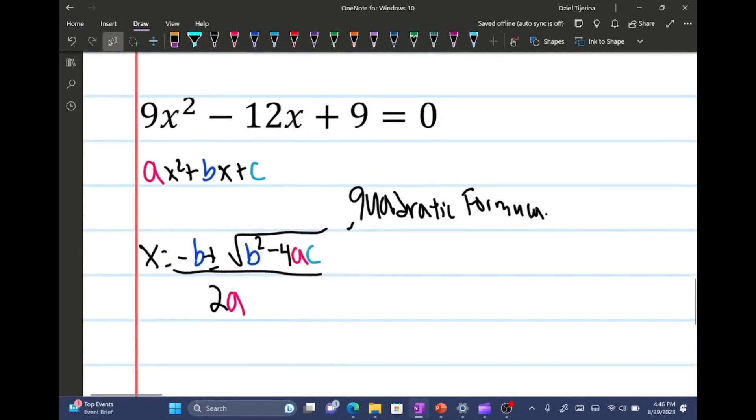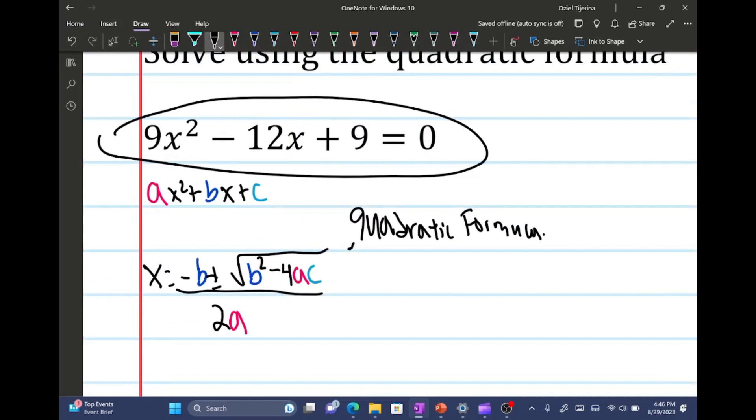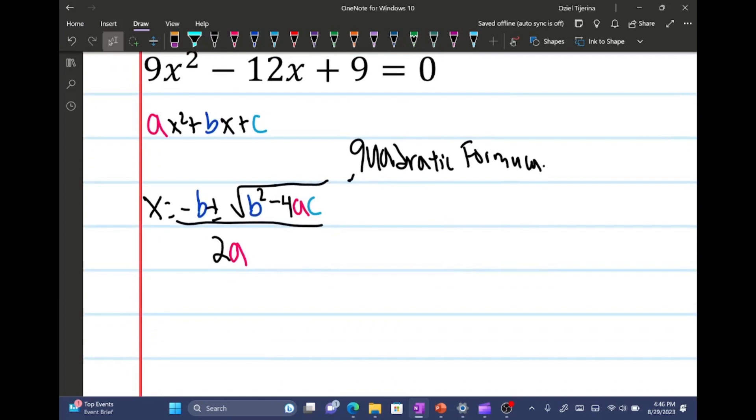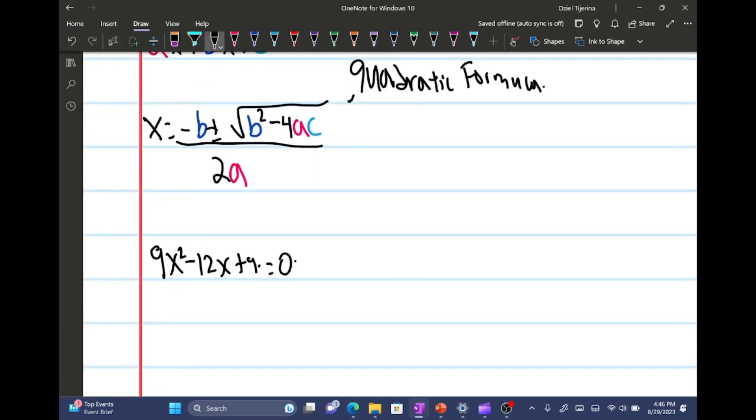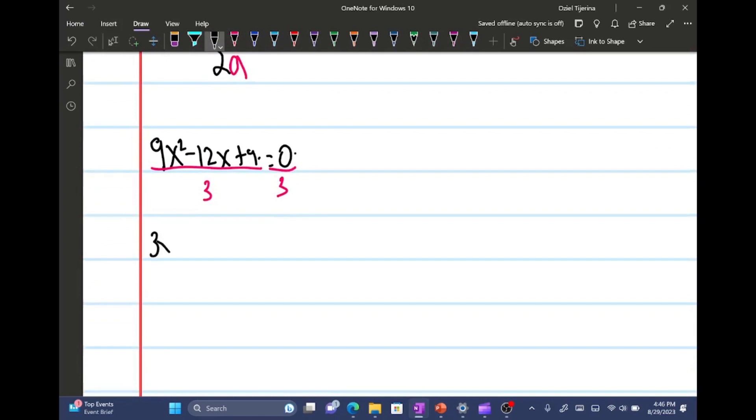So we're gonna use this to solve this here. Now one of the things that I notice from this problem right off the bat is that we can divide both sides by 3 because they have 3 as the common factor. So if I go ahead and do that, I will get the following.